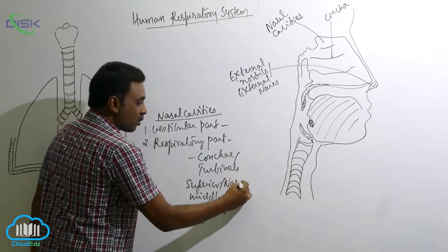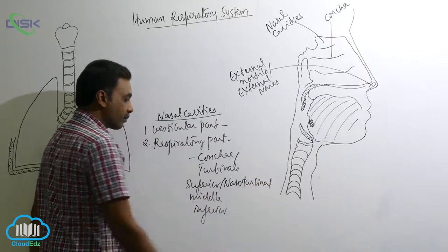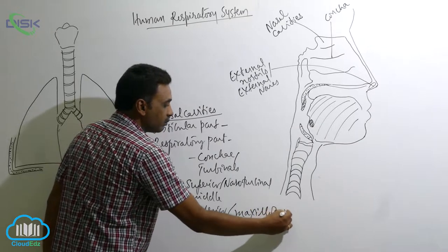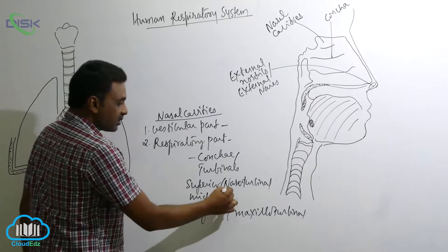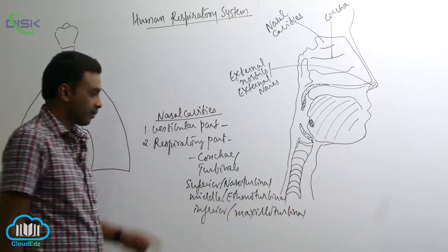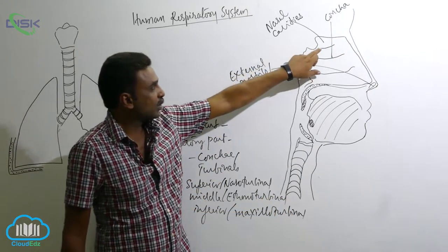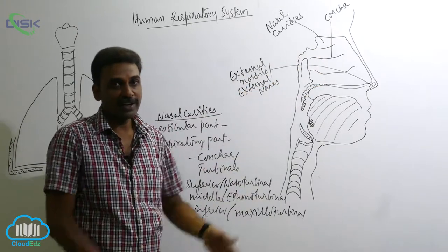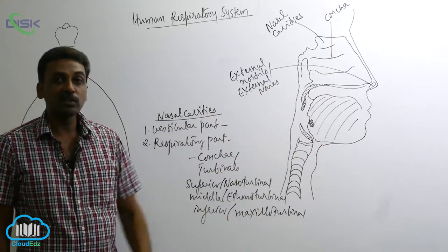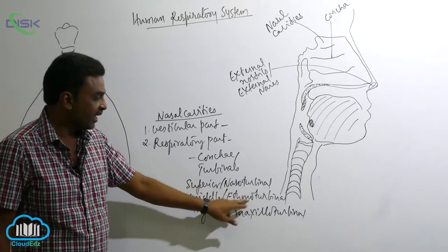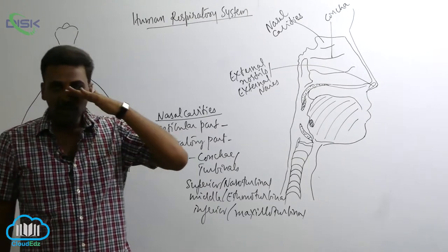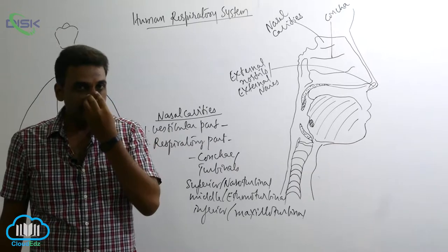The superior concha is also called nasoturbinal. The inferior concha is also called maxilloturbinal. The middle concha is also called ethmo-turbinal. The nasoturbinal is present on the superior side, the ethmo-turbinal on the lateral side, and the maxilloturbinal on the inferior side. The nasoturbinal and ethmo-turbinal are parts of the ethmoid bone, which is present in between the orbits and nasal cavities.